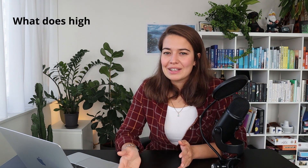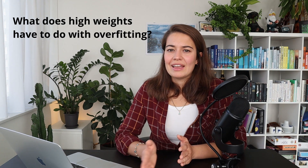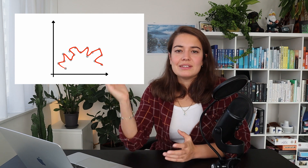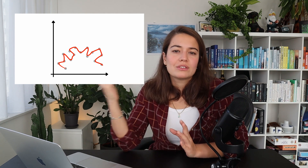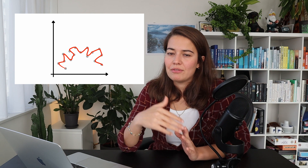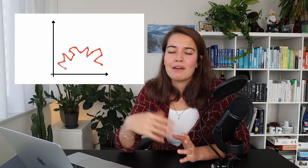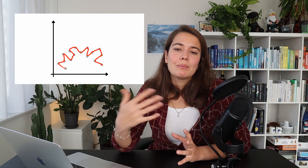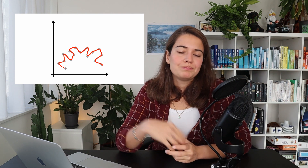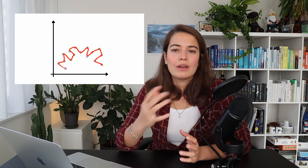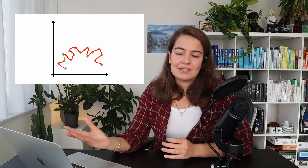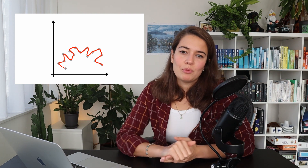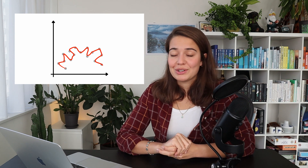One thing that I didn't understand when I first read this description is: what do high weights have anything to do with overfitting? Think of a model that has overfit — it will probably look like this. This is the input versus the output. Our models and problems are a lot more complicated with many more features, but let's think of a model where we have one input feature and the output. When a model has overfit, we're going to see something like this, given the red line is our model — the pattern that our model has learned.